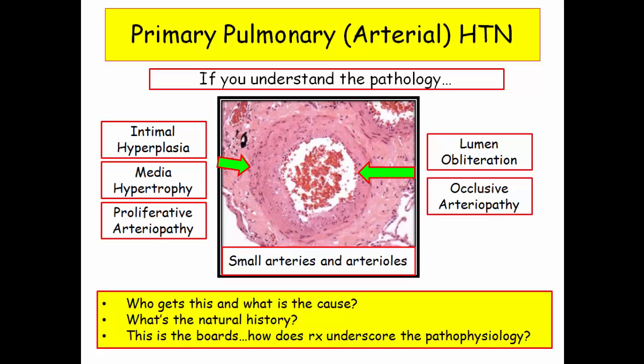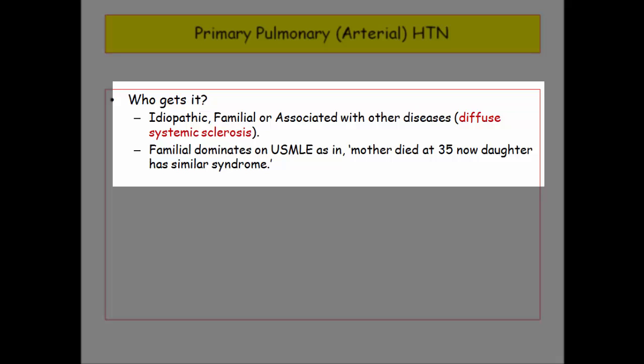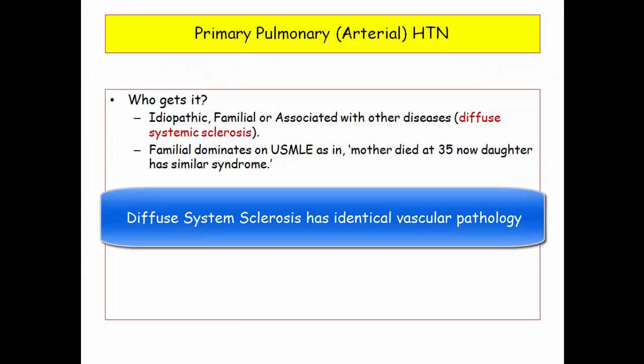Let's answer: who gets this, what is the cause, what is the natural history, and how does treatment underscore the underlying pathophysiology? Idiopathic and familial make up the majority. The other key association is with autoimmune disorders — of those, diffuse systemic sclerosis is the most important. The vascular pathology is identical. Expect to see evidence of pulmonary artery hypertension — shortness of breath and a loud S2 — in a patient with systemic sclerosis.